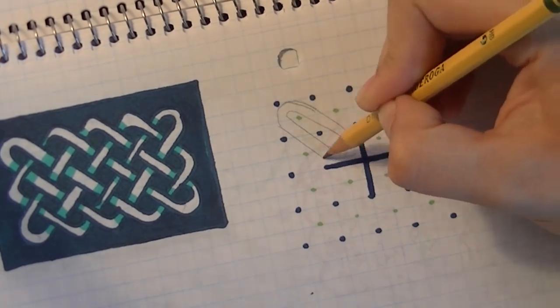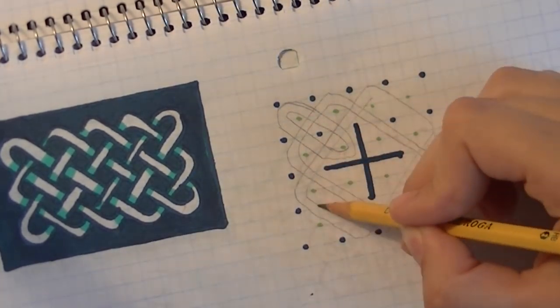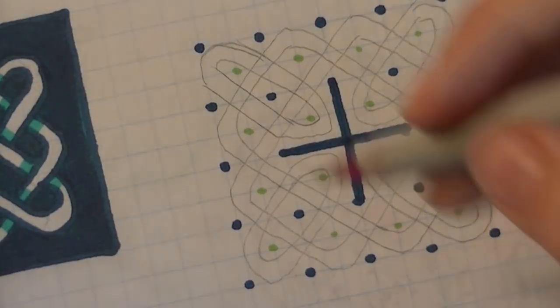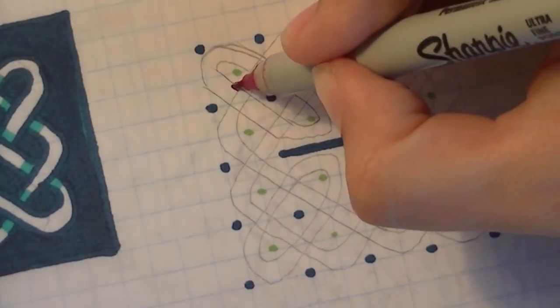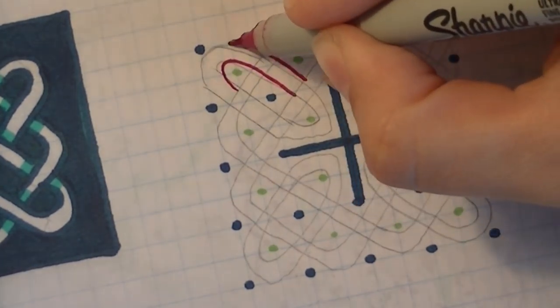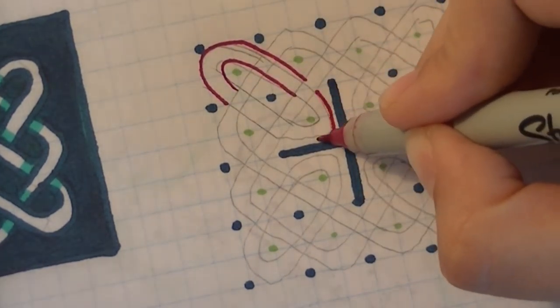Now, in this case, instead of drawing in all of the diagonal lines, I'm just going to eyeball it for where these bands are going to go. This is just something that comes with practice. You'll be able to see where these bands belong. And then, of course, I outline these bands in an over-under pattern, bouncing off the walls.